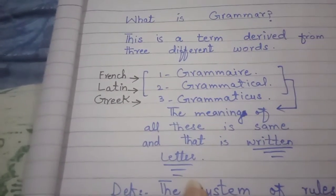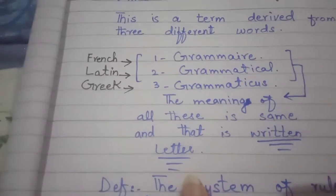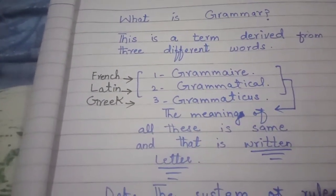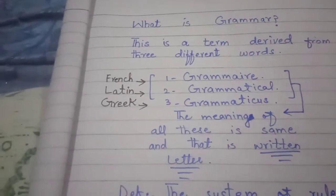You all know there are 26 letters, 26 alphabets. When we combine them, when we arrange them, then we see the exact, clear, and neat meaning.